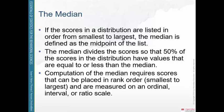What about the median? The median is simply the middle number. If you line up your scores in order from smallest to largest, the median is the middle number. The median divides all the scores in your distribution so that 50% of the scores are below the median and 50% are above.